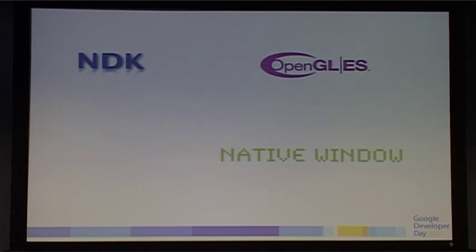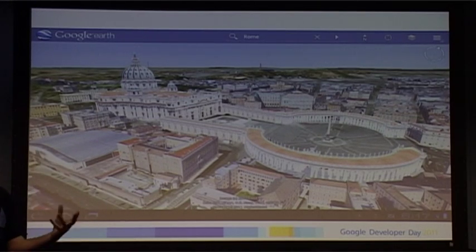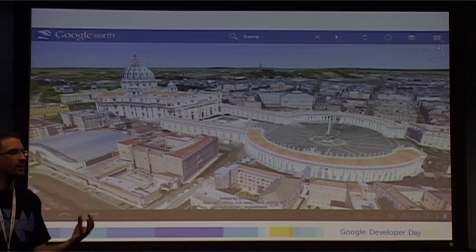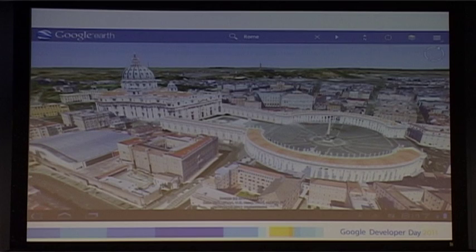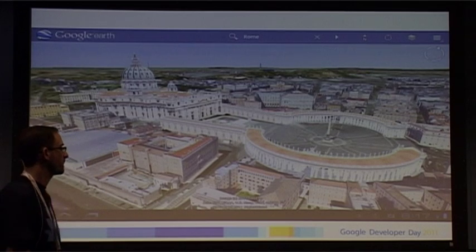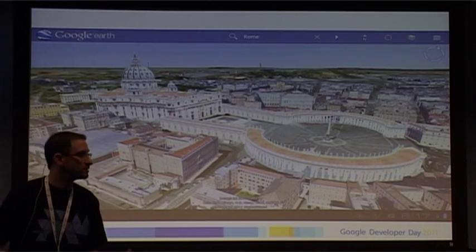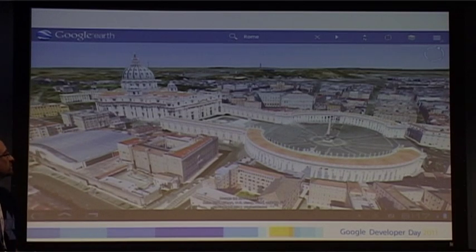An example of an application that uses this is Google Earth. When you're using the NDK, you're writing code for ARM chips — C and C++ code. Your application is then limited to the devices that have that chip set. Google Earth works on ARM7 devices. But what you get is a very immersive experience with very fast graphics and access to all the graphics memory.